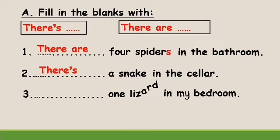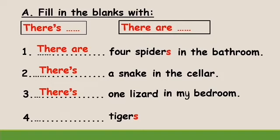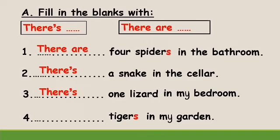First, look at the noun — 'one lizard'. Is it singular or plural? Yes, singular nouns. So we need to use 'there's'. There's one lizard in my bedroom. Number four: tigers in my garden. Look at the noun — 'tigers'. Is it singular or plural? Yes, plural, because there's an S at the end. So we use 'there are'. There are tigers in my garden.